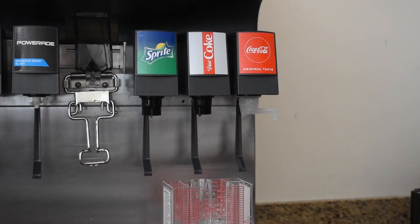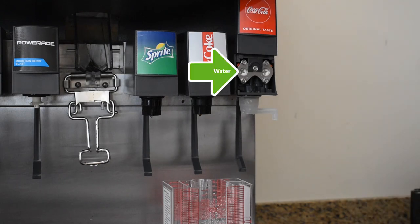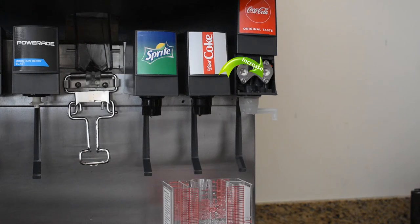To access the flow control adjustment screws, lift the cover. Your water adjustment is always on the left, syrup on the right. Turn the adjustment screws clockwise to increase the flow and counterclockwise to decrease the flow.